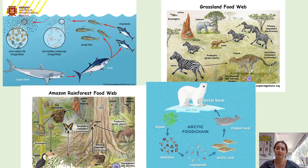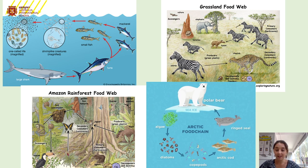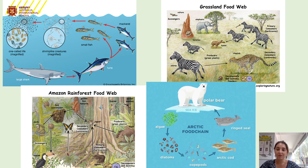Boa constrictors are very interesting animals — they're able to wrap their body around an animal, squeeze it, and then swallow it whole. Finally, we have an Arctic food chain where the polar bear is the top predator. That food chain starts with algae in the ocean capturing sunlight, then diatoms, which are like zooplankton, then copepods, then small fish, then a seal, and then the polar bear. This gives you an outline of what food webs look like in different habitats.